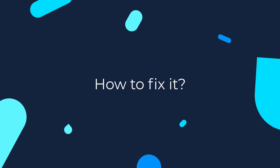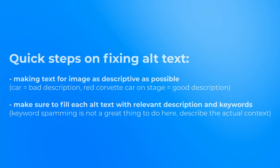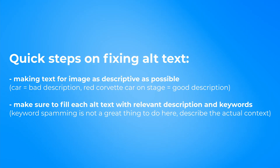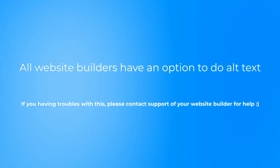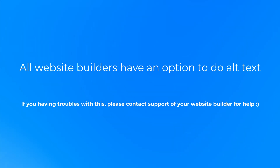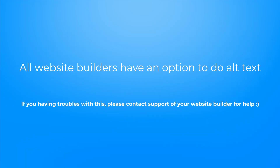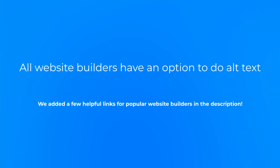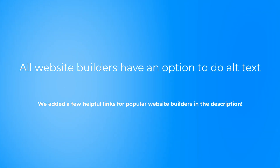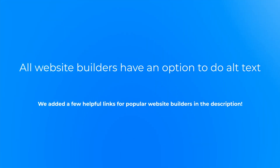Last but not least, here is how to fix it. Make sure every image on all pages has a descriptive alt text. All website builders have the capability to add them in most cases, but if your website builder does not have a straightforward way of doing so, we suggest hitting up support for assistance. We've added a few links in the description for three of the most commonly used website builders with instructions on how to add alt text.